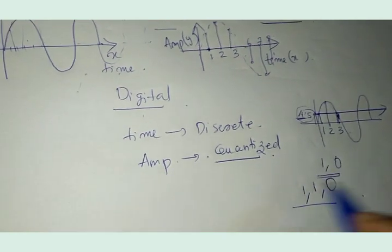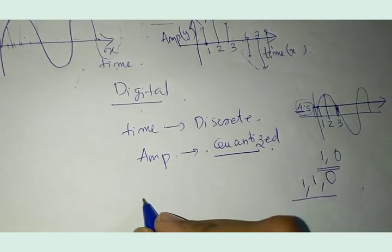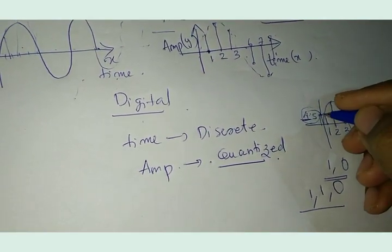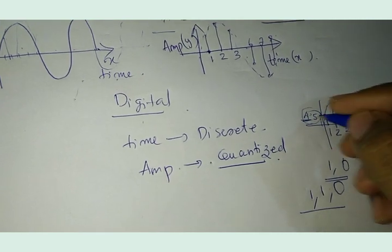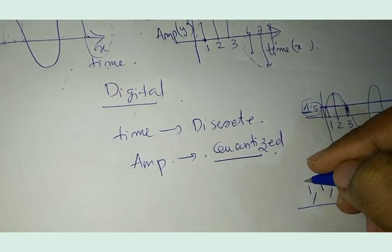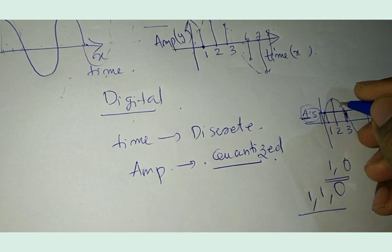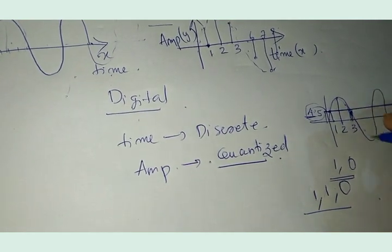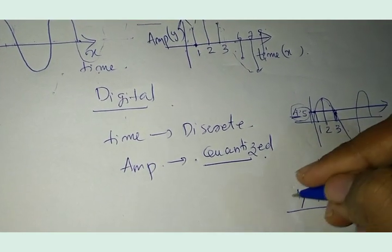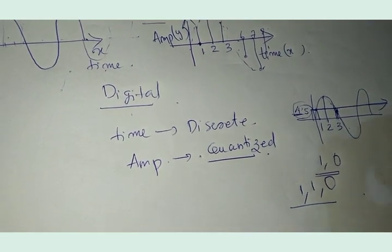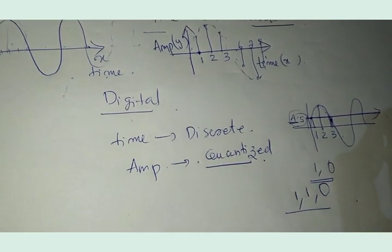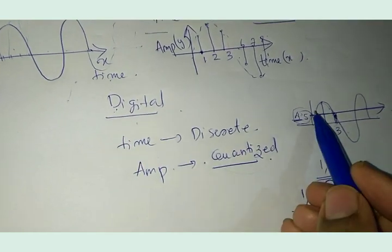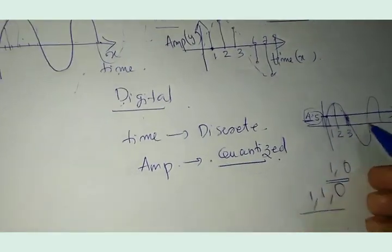In order to quantize the signal, you need a threshold. If the graph goes above the threshold, the value is taken as 1; if the graph dips below the threshold, the value is taken as 0. We can write the signal as just 1, 0, 1, 0, 1, 0. That is quantization. A digital signal is quantized in amplitude and discrete in time.